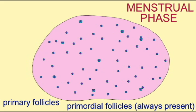Every menstrual cycle, 20 or 25 primordial follicles will then continue their meiotic divisions from the point at which they had paused prior to birth.